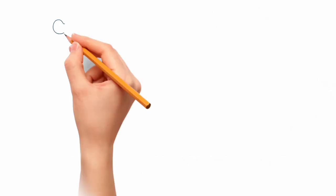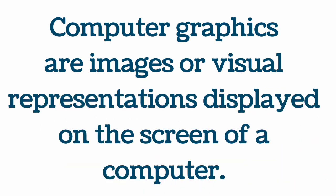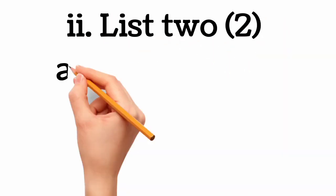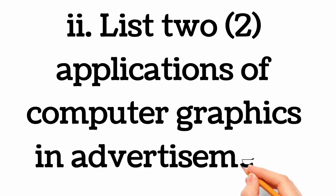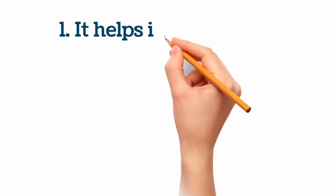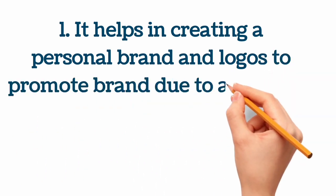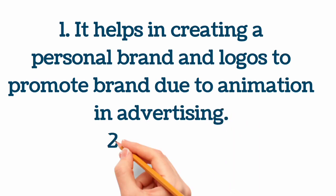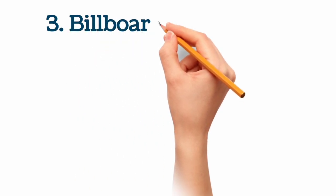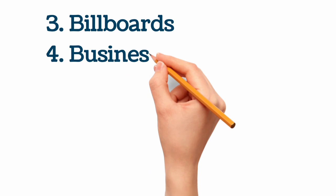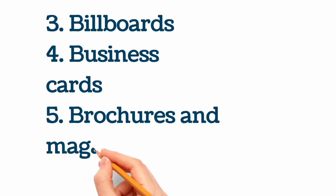Question 4a: define computer graphics. Computer graphics are images or visual representations displayed on the screen of a computer. List two applications of computer graphics in advertisements: one, it helps in creating a personal brand and logos to promote brands; two, animation in advertising; three, scientific visualization — animation was the key word; four, business cards; five, brochures and magazines.